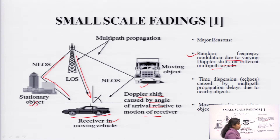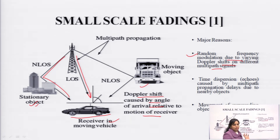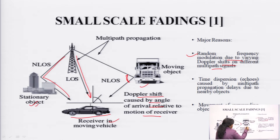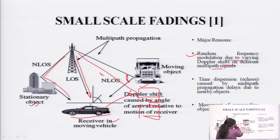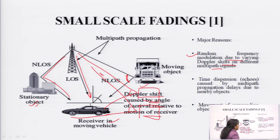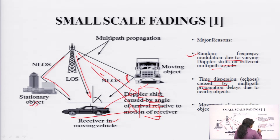Since the receiver is moving in nature, the Doppler frequency calculated either by adding or subtracting will change because it is not stationary. It is possible that the signal will be received at 90 degrees, then 180 degrees, then 270 degrees — the angle of the signal changes. All these signals are added at the receiver and undergo multipath fading, known as small scale fading. Another reason is time dispersion caused by multipath propagation delays due to nearby objects, and movement of surrounding objects.